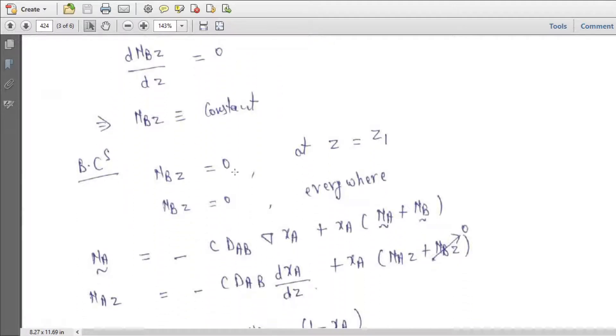Boundary conditions: NBZ equal to zero at Z equal to Z1 because B is not diffusing. Because B is not diffusing, NBZ equal to zero everywhere within A actually.